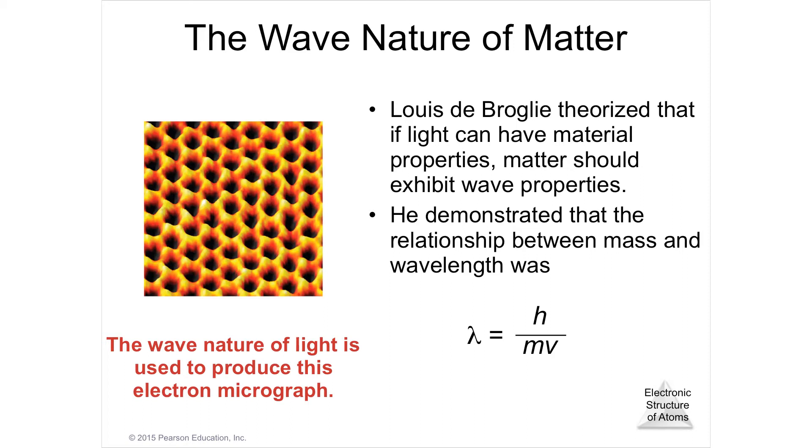If you were to solve for h, you would multiply mv by lambda, and that means as mass goes down, as the mass gets smaller, the wavelength would get larger.